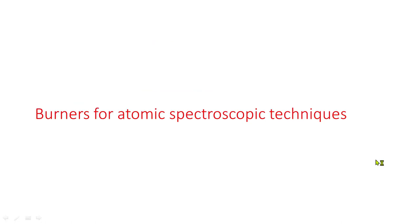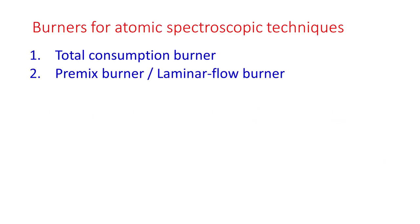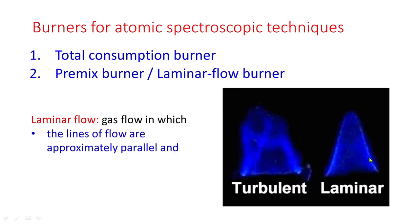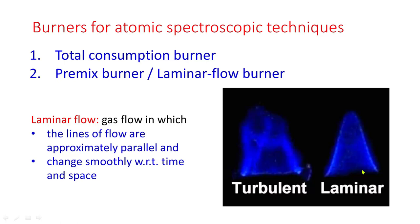Burners used for atomic spectroscopic techniques are the total consumption burner and the premix burner or laminar flow burner. In laminar flow, gas flows in lines that are approximately parallel and change smoothly with respect to time and space. This is non-turbulent.